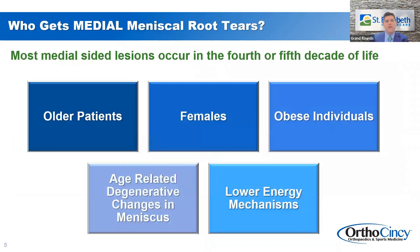Medial meniscal root tears are very common in our population. They're seen mostly in older patients in the fourth or fifth decade of life. Females are more likely to get these tears than males, and patients who have increased BMI, age-related degenerative change in the meniscus, and lower energy mechanisms are at higher risk. This patient population is almost thought of as a fatigue failure over time, and the change in biomechanics causes them to be more prone to these injuries.